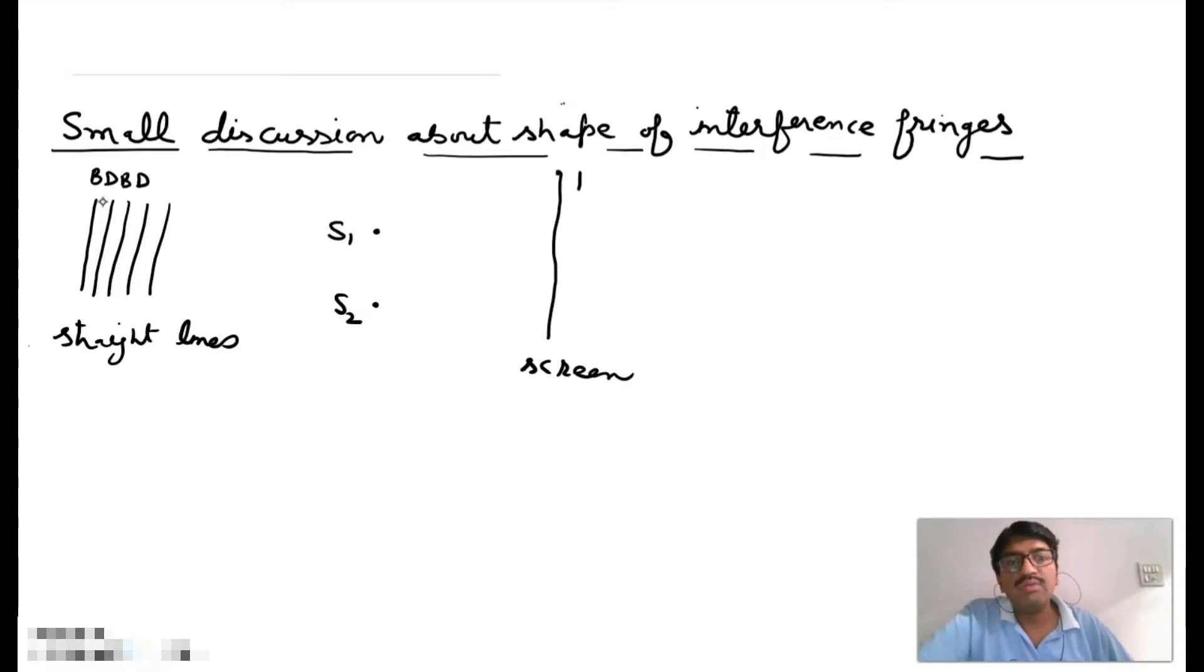And suppose this is an observing point P and this is a path difference. And we know that path difference is S2P minus S1P.